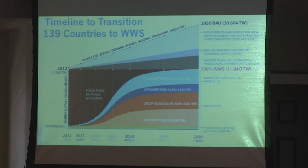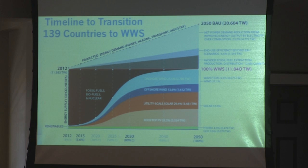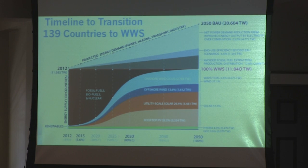How long will it take to transition? We're proposing 100% transition by 2050 and 80% by 2030. If we do nothing, we continue along the high-emissions path. If we electrify everything and provide electricity with clean renewable energy, we reduce power demand significantly, and by phasing out fossil fuels such that by 2030 we've eliminated 80% of emissions.